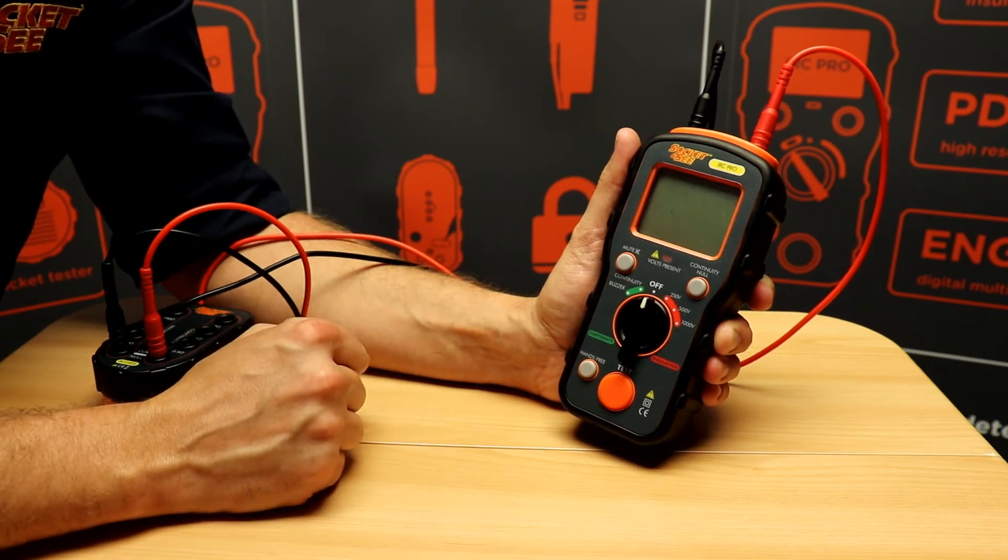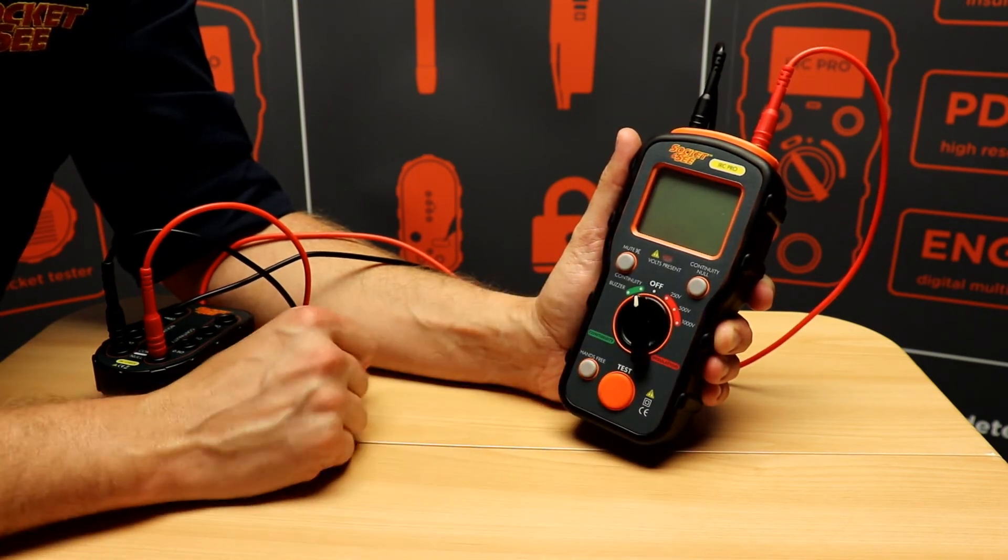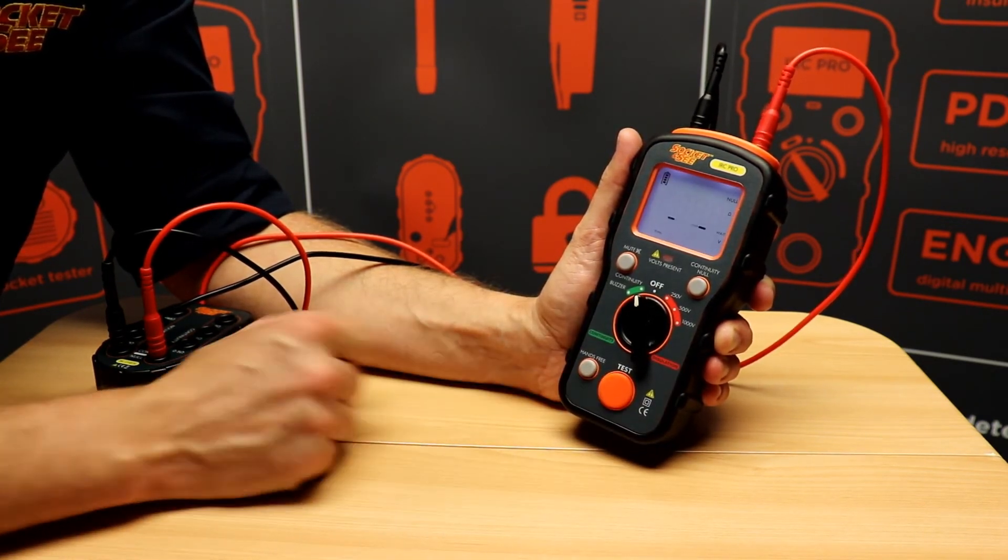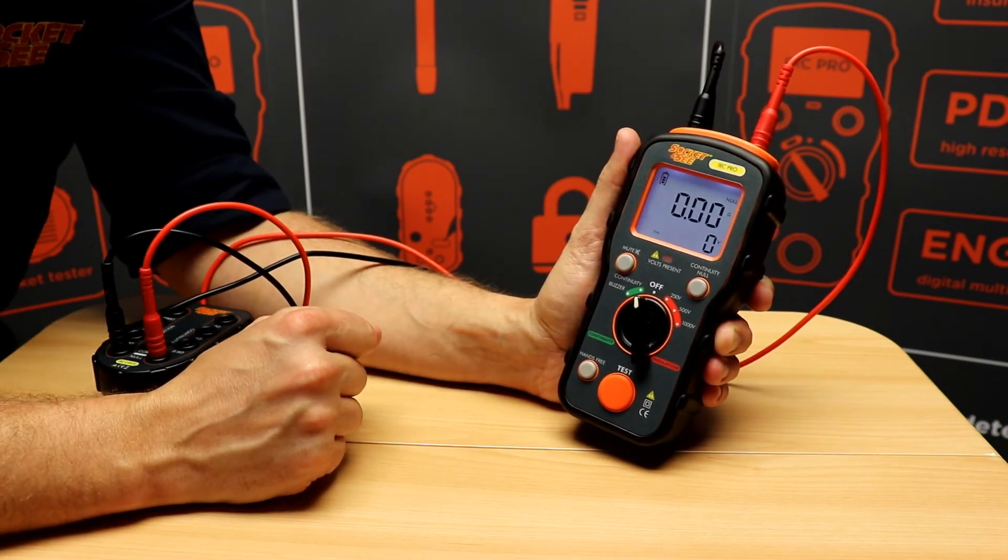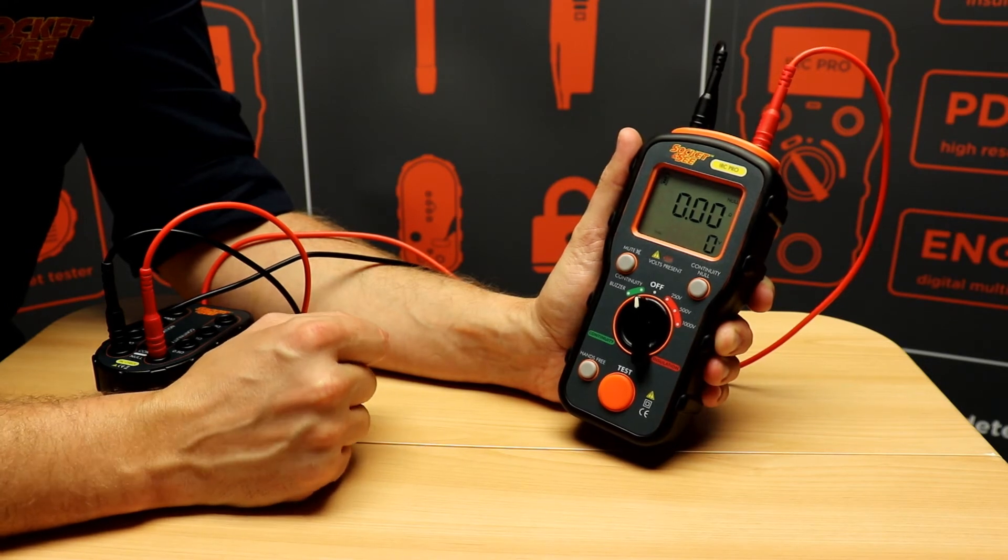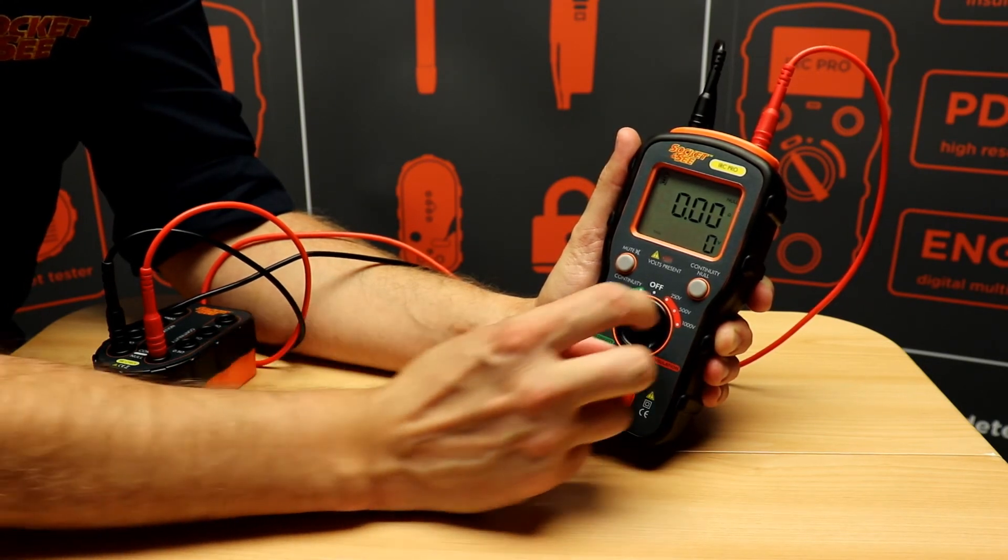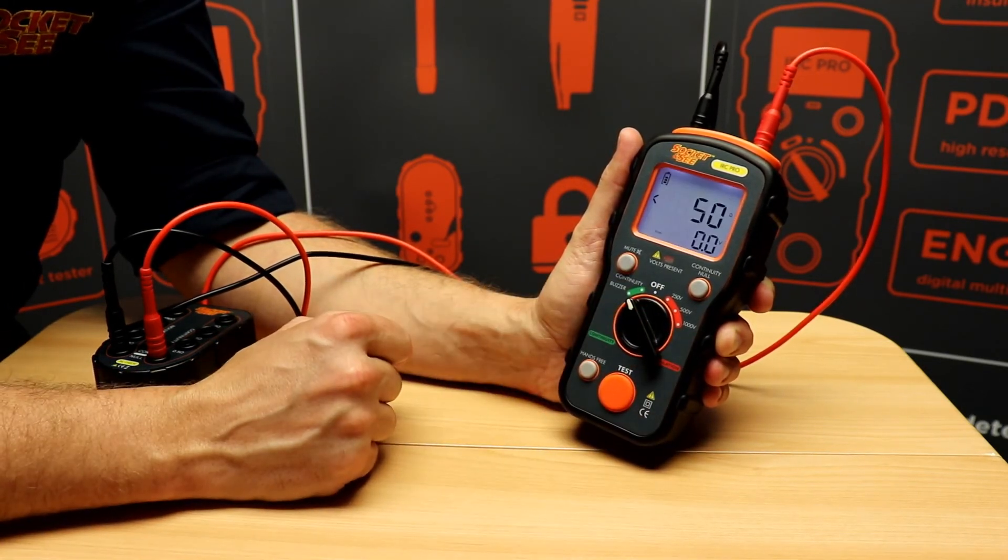Even if the tester is powered off and powered on again it'll take that null value into account. The IRC Pro has a handy buzzer feature for baling out. Any resistance under 50 ohms and a solid tone will be given.